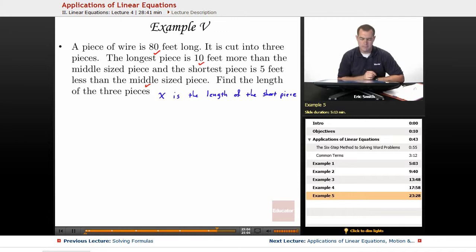So let's see if we can do it. So my middle piece, or I'm sorry, the short piece is 5 feet less than the middle piece. So if I take x and I add 5 to it, that should give me my middle piece just fine.